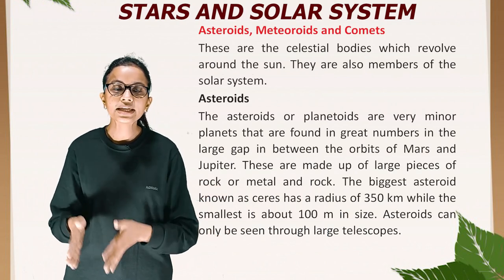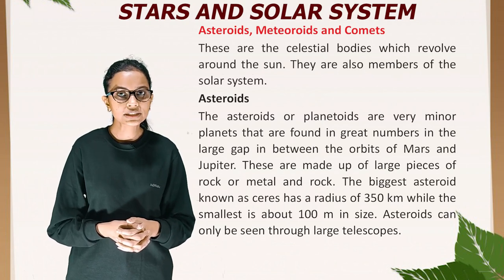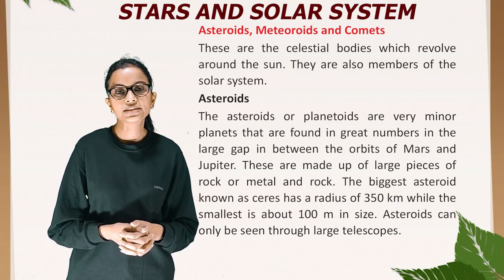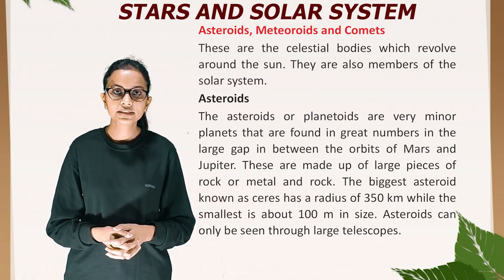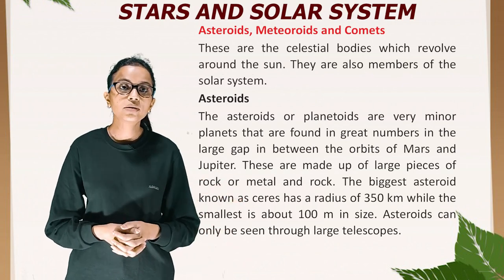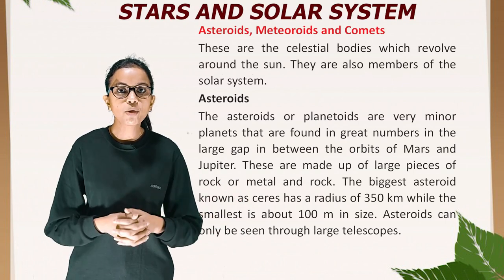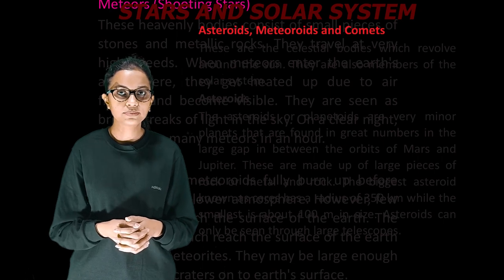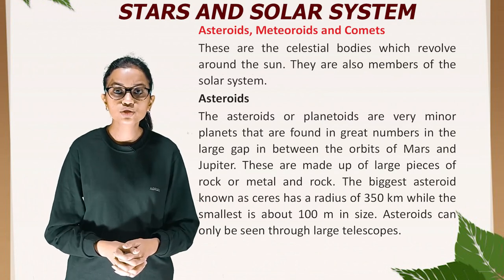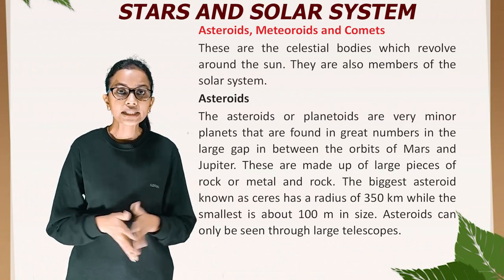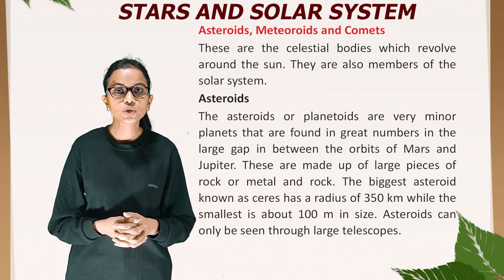Asteroids, meteoroids, and comets are celestial bodies which revolve around the Sun and are members of the solar system. Asteroids, or planetoids, are very minor planets found in large numbers in the gap between the orbits of Mars and Jupiter. They are made up of large pieces of rock or metal and rock. The biggest asteroid, known as Ceres, has a radius of 350 kilometers, while the smallest is about 100 meters in size. Asteroids can only be seen through large telescopes.